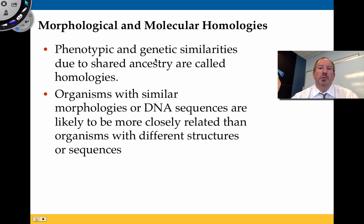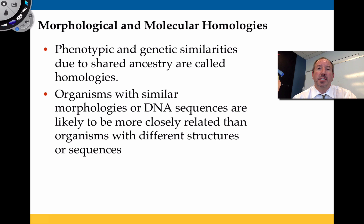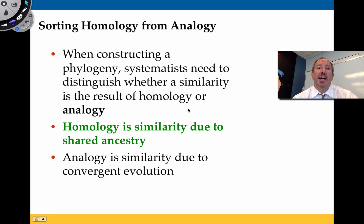When you're looking at the actual ancestry of a group of organisms, we can say that those shared characteristics are the result of homologies. Organisms with similar morphology and similar DNA sequences are likely to be more closely related than organisms that do not have similar sequences or similar structures. But you have to be careful when constructing phylogeny — systematics need to distinguish whether a characteristic is similar as a result of homology, which is shared ancestry, or whether it's an analogy, which is due to convergent evolution. Analogous structures are different from homologous structures.